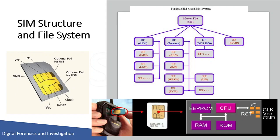The file system resides in the EEProm. There are three different types of file system: master file, dedicated files, and elementary files — MF, DF, and EF respectively. The master file is the root of the file system. Dedicated files are the subordinate directories of the master file. Elementary files contain various types of data, such as sequences of data bytes or sequences of fixed-size records. As shown in the figure, there are three different types of dedicated file directories: GSM, Telecom, and DCS1800.